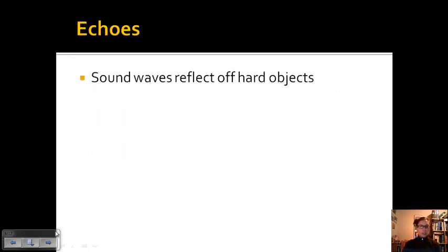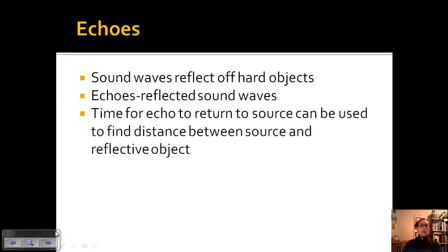Echoes are sound waves that reflect off of hard objects. Those reflected sound waves are the echoes. The time for an echo to return to the source can be used to find the distance between the source and the reflective object. We talked about this a little bit in Chapter 14.